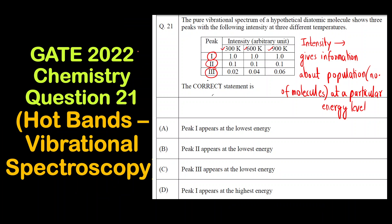Peak 3 appears at the lowest energy — the correct answer is option C. I hope you have understood the concept of hot bands. Thank you so much.